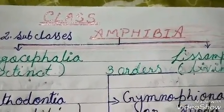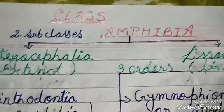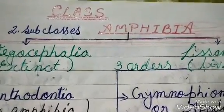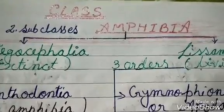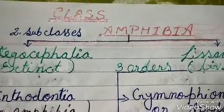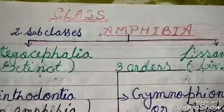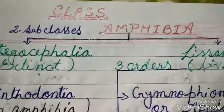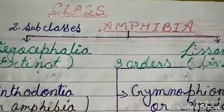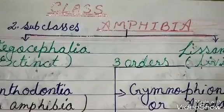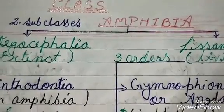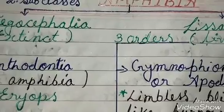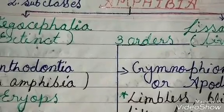The head is distinct, trunk elongated; neck and tail may be present or absent. Limbs are usually two pairs, though some are limbless. The skin is soft, moist, and glandular; pigment cells are also present. Exoskeleton is absent.